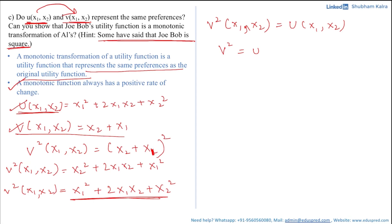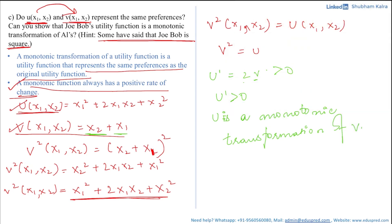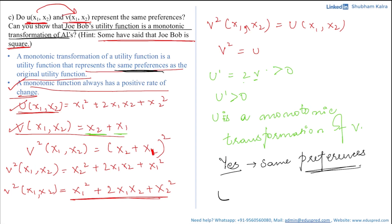Using the calculus approach: since u = v², the first derivative is u′ = 2v. Since x1 and x2 are positive or zero, v = x1 + x2 is positive, and multiplying by 2 gives a positive number. Therefore u′ is positive, confirming that u is a monotonic transformation of v. This means Joe Bob's utility function is a monotonic transformation of Al's, and therefore u and v represent the same preferences.